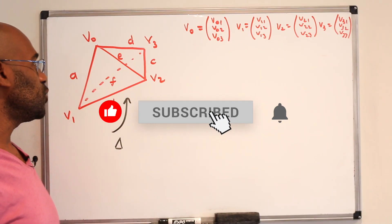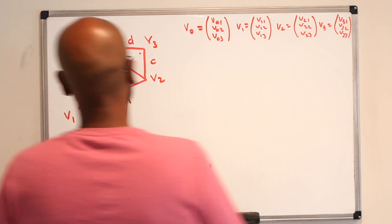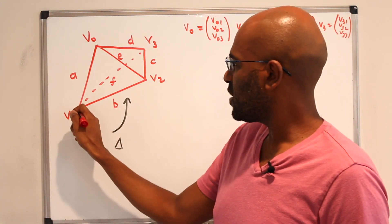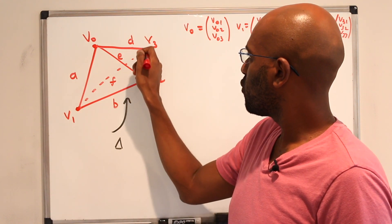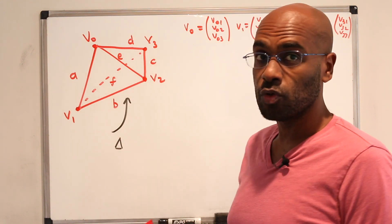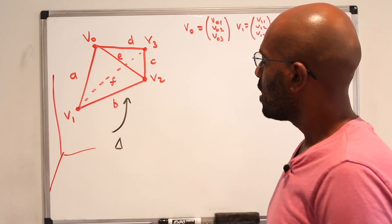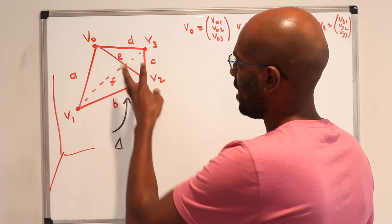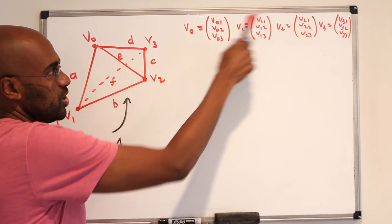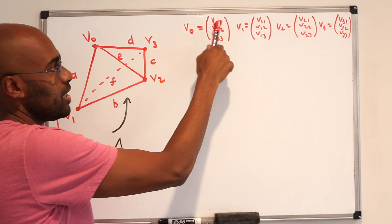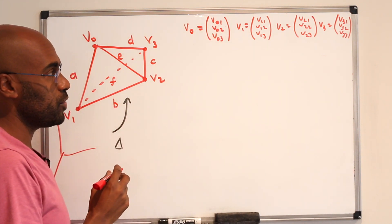To get started, we picture this tetrahedron living in R³ and assign vectors v₀, v₁, v₂, and v₃ to its vertices. These vertices will have actual coordinates. The coordinates of vᵢ are (vᵢ₁, vᵢ₂, vᵢ₃).